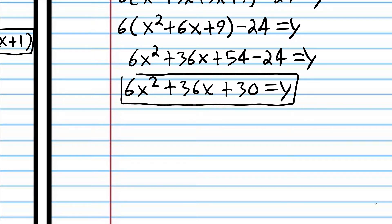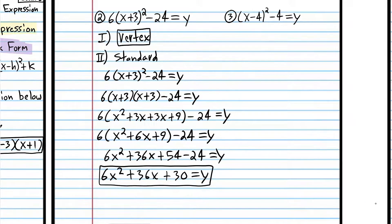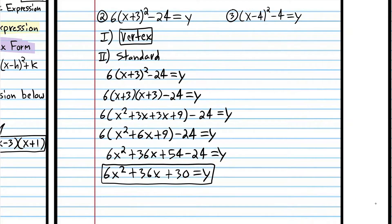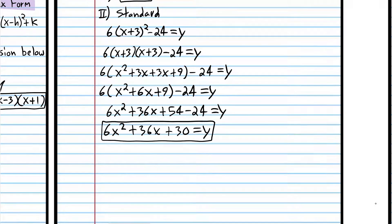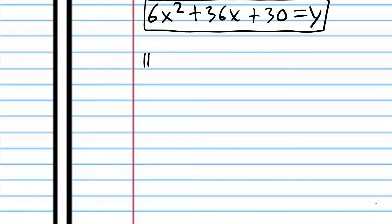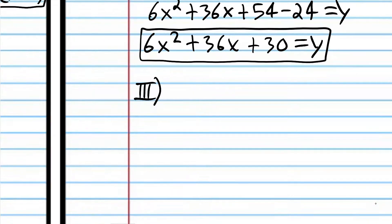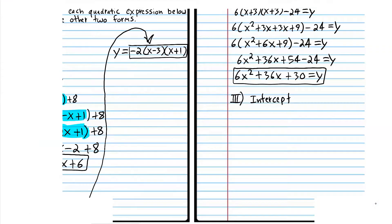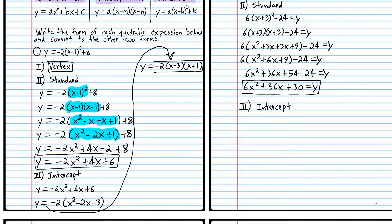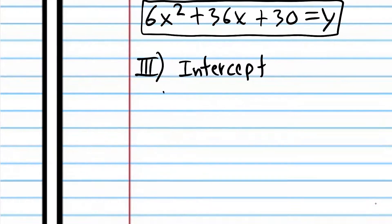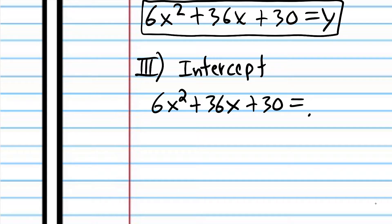We succeeded in converting from vertex form to standard form. Now step 3: we're going to convert to intercept form, so I'll title that step 'intercept.' I'm going to start where we left off in standard form because that's just the easiest way. I can see there's a common factor in each of these terms — it's 6 — so I'm going to factor out 6.